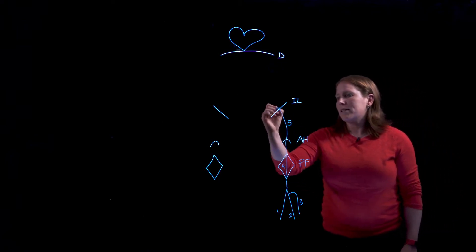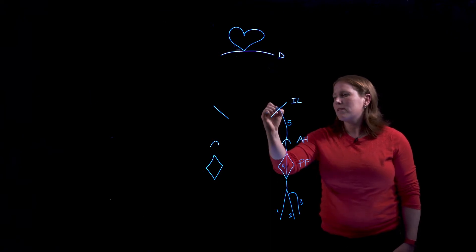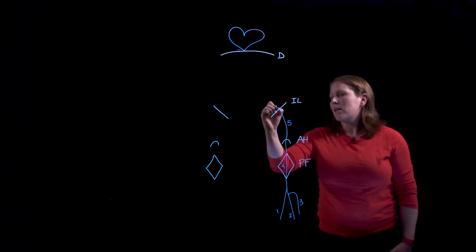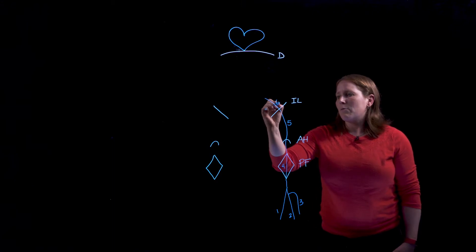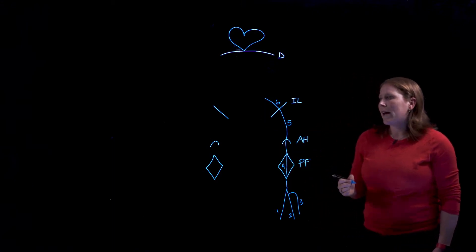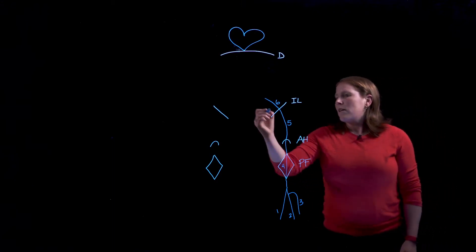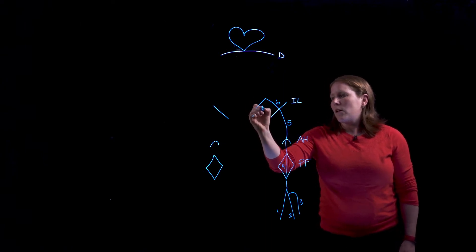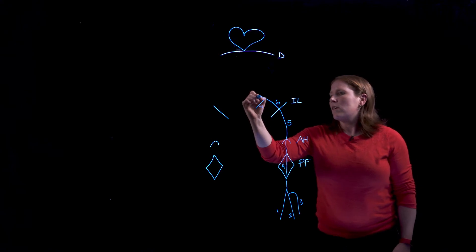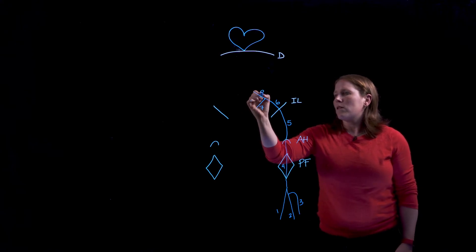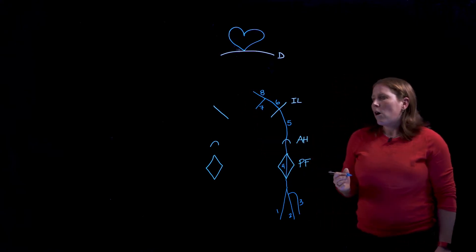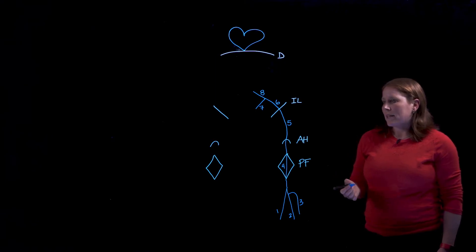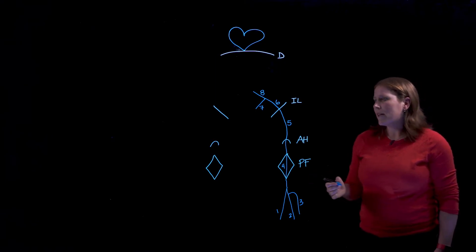The femoral vein then has to pass deep to the inguinal ligament to enter into the pelvis and when it does that it will become the external iliac vein. The external iliac vein will unite with the internal iliac vein to form the common iliac vein. In this case this is on the left hand side.